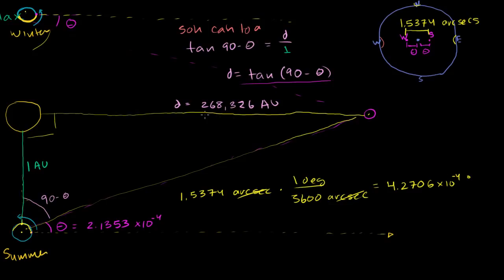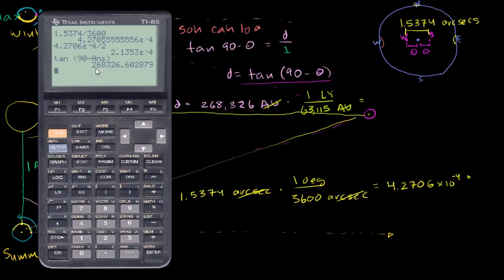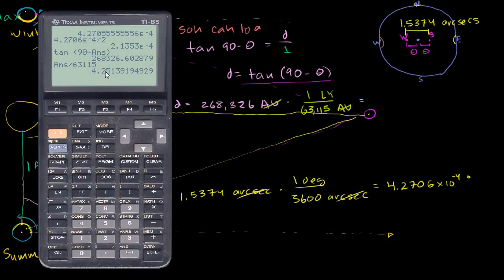Now if we wanted to calculate that in light years, one light year is equivalent to 63,115 astronomical units, give or take a little bit. So this is going to equal this quantity divided by that quantity in light years. 268,326 divided by 63,115 gives us about 4.25 light years.